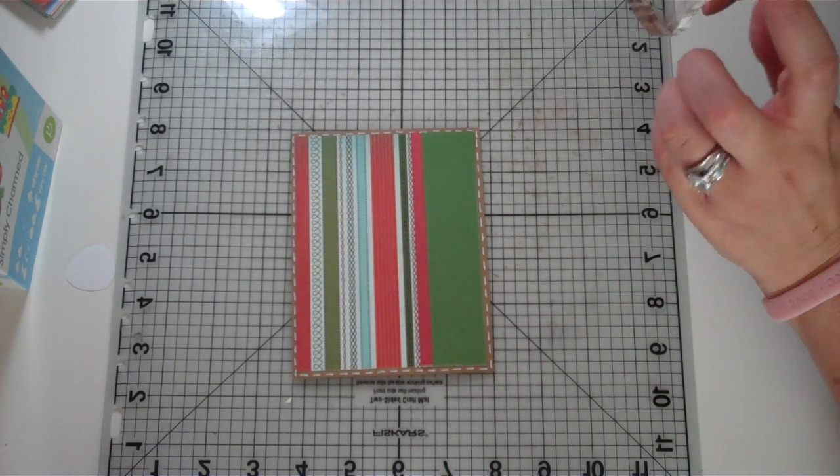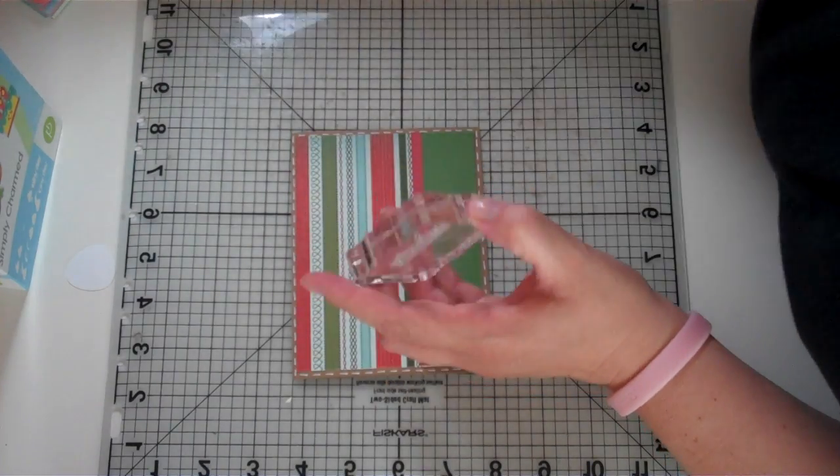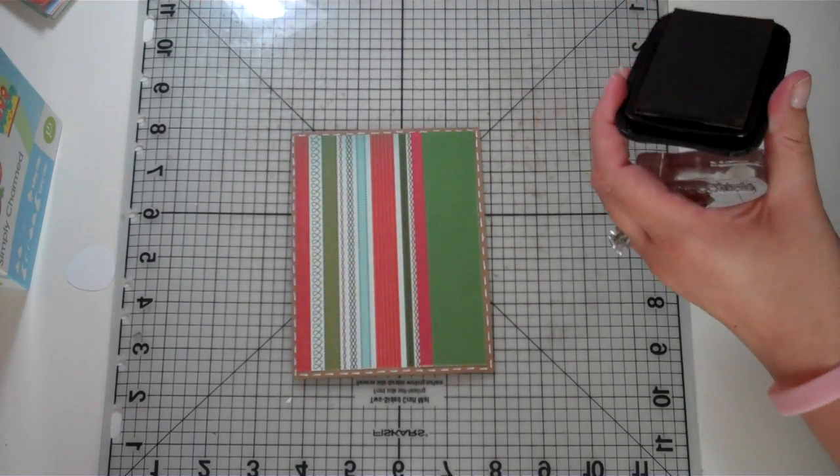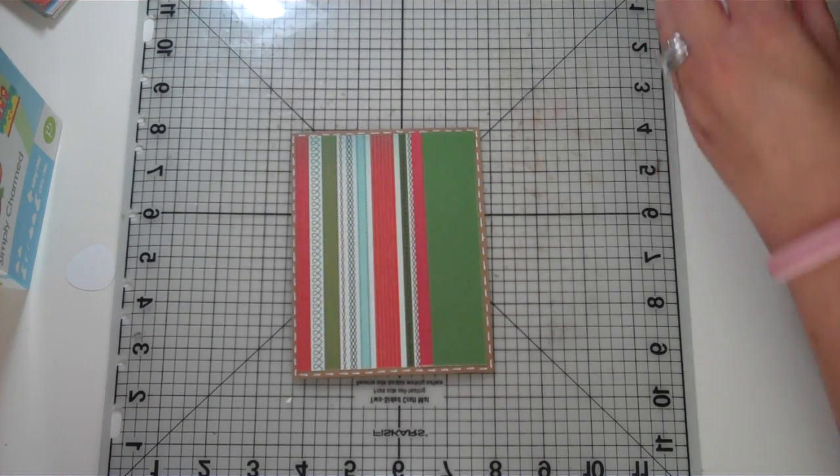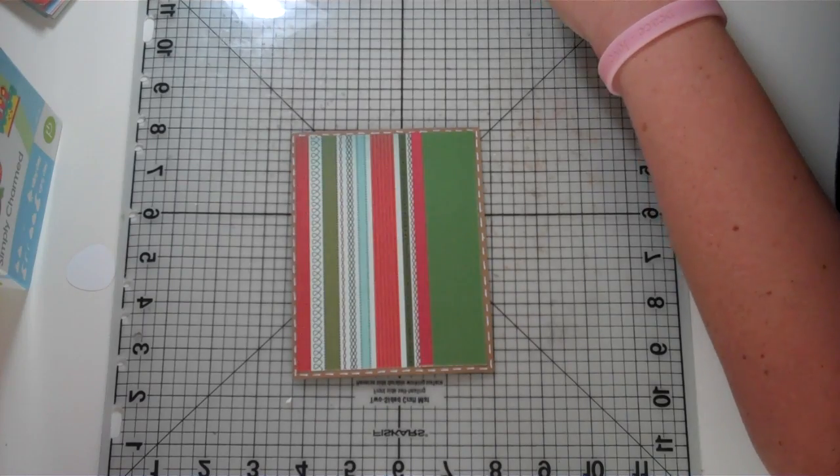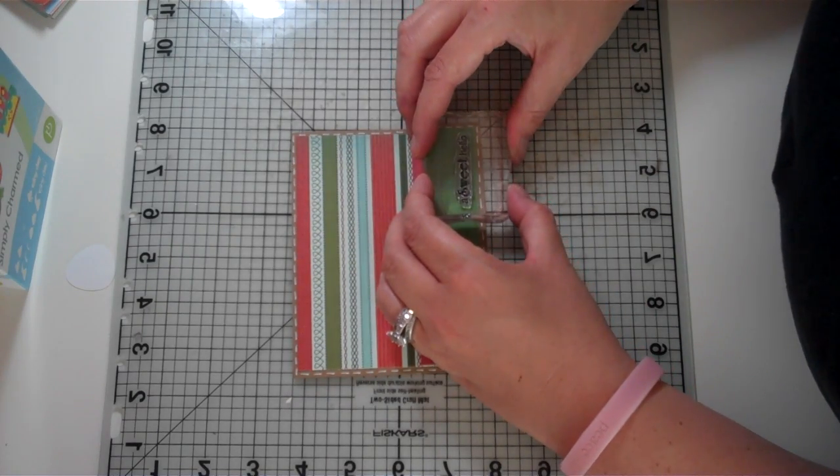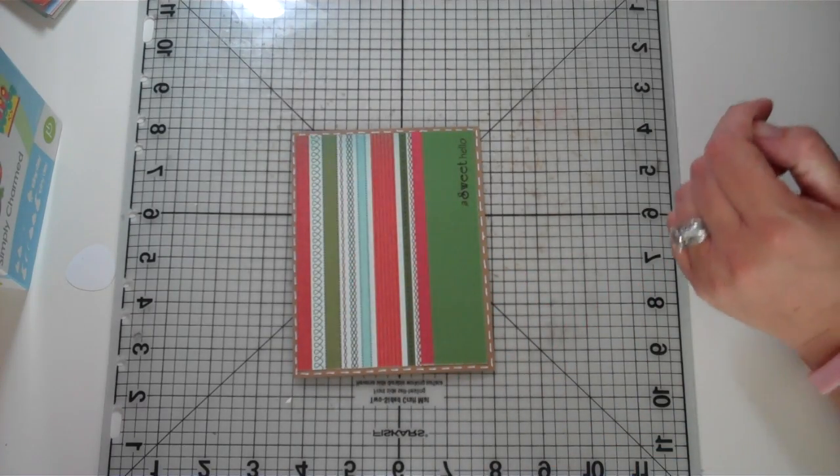Okay, now I have my little sentiment, which is a sweet hello and I'm just going to use some of the Stazon Timber Brown. And this sentiment is from the Scrappy Mom Stamp Sweet Somethings. And we're just going to stamp this down here at the bottom. Sweet hello.